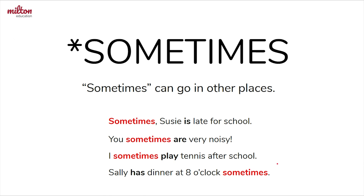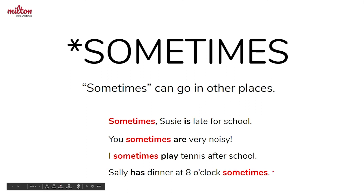But there's one exception — it's sometimes. Sometimes can go in different places in a sentence. For example, it can go first, like: sometimes Susie is late for school. It can go in the middle, like: you sometimes are very noisy, or I sometimes play tennis after school. Or it can go at the end of a sentence: Sally has dinner at eight o'clock sometimes.